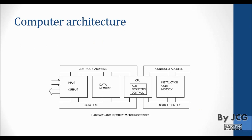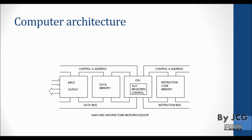This is the Harvard architecture. Notice that the two components I was telling you about — data memory and instruction code — are separated by different paths. These paths are called buses. In this architecture, called Harvard, we have a separate bus for data and a separate bus for instructions.